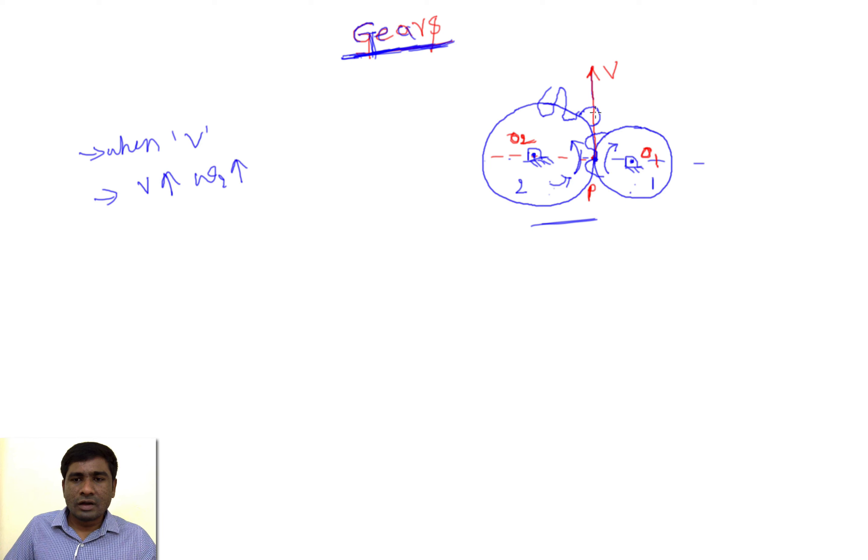These projections are called teeth, where teeth is plural and tooth is singular. That's how we make the gear. If you consider the velocity of this point, which is a common point for these two cylinders, it can be written as vp = r1·ω1 = r2·ω2.